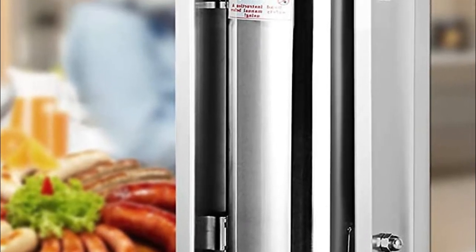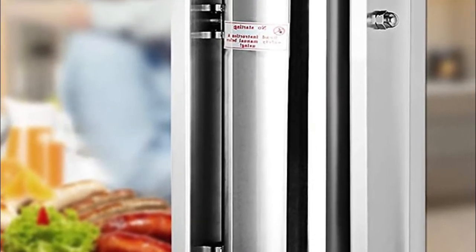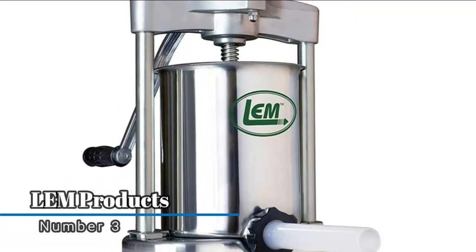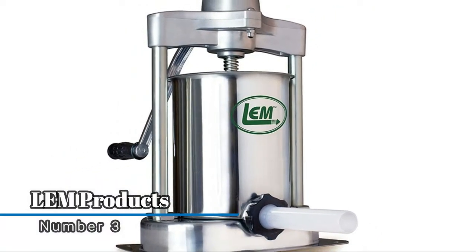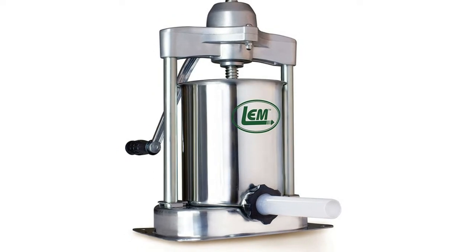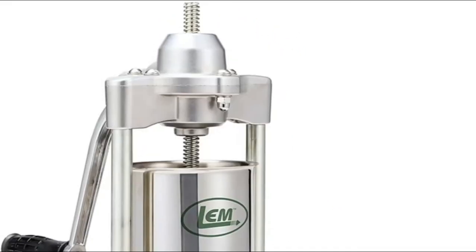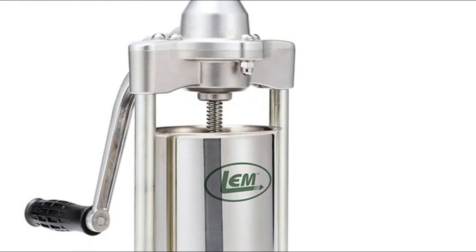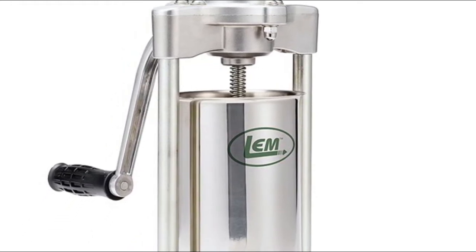Number 3: LEM Products. Cylinder holds five pounds of meat. Cylinder removes easily to fill and clean. Hardened steel gears with a protective gearbox. Stainless steel base and cylinder. Comes with three plastic stuffing tubes.